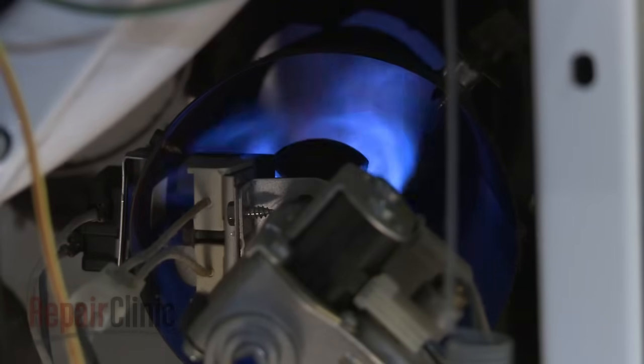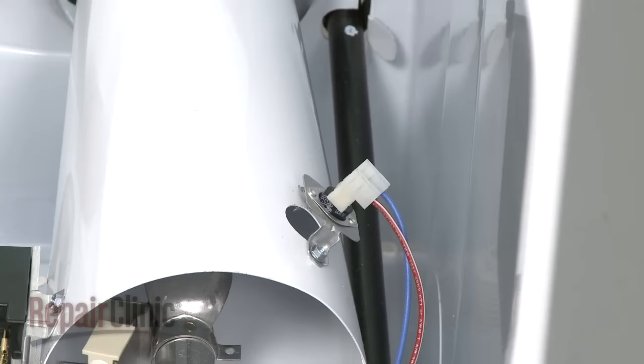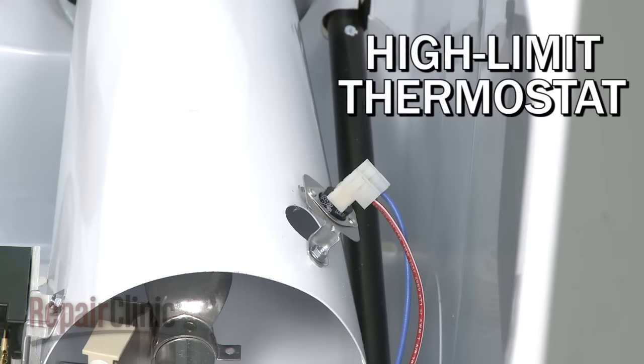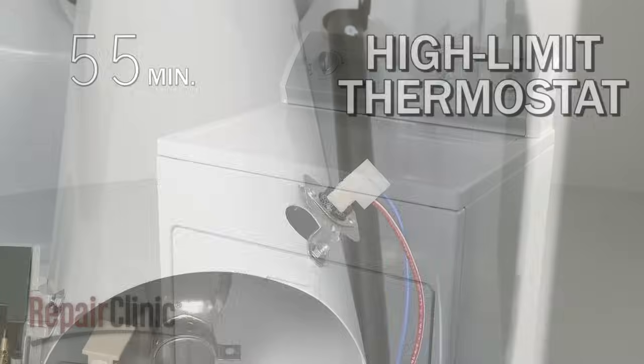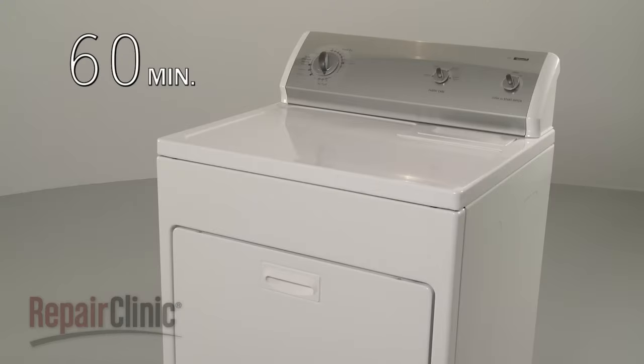If the air flow is poor, the flame will not be pulled through the burner housing properly. This can cause the high-limit thermostat to heat up and switch off the voltage to the burner assembly. The thermostat will reset after it cools and the process will repeat. However, the dryer will take too long to dry because the heat is continually being shut off and the thermostat itself can become damaged.